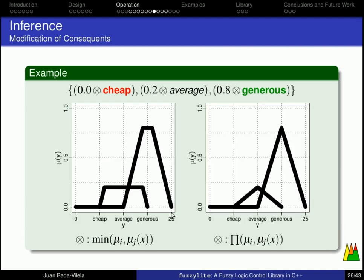Now, if we define the fuzzy multiplication, or the activation operator in this case, as a proper multiplication as we know it, then what we're doing is basically we're scaling the membership functions to the activation degrees. So, 0.0 cheap would be still 0. 0.2 average, you see that we have scaled a linguistic term to 0.2, and likewise, we have scaled the linguistic term generous to 0.8.